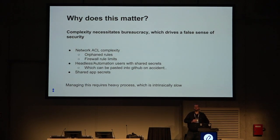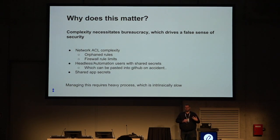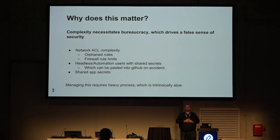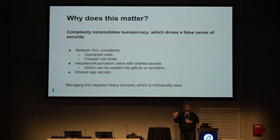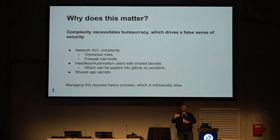So why does this matter? We want to protect all these different parts of our infrastructure, and without the right tools in place we do the best we can with what we have. One of those things is network ACLs. I can't establish trusted application identity between two endpoints, so I'm going to go to the firewall and make sure there's only a specific port open between these two servers. Problem solved — except now we have an implicit level of trust.